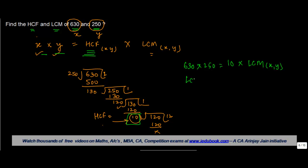So the LCM is equal to 630 into 250, which is these two numbers, divided by 10. 10 cancels this off here. If you do the multiplication, 25 into 3 is 75 plus 7 carry. 25 into 6 is 150 plus 7 is 157. So the LCM